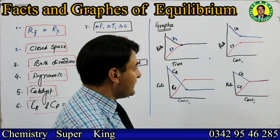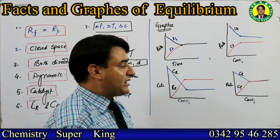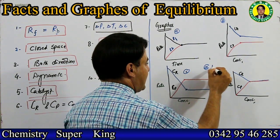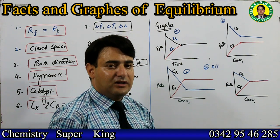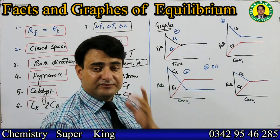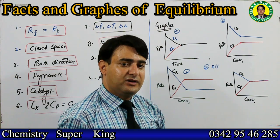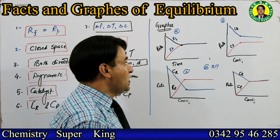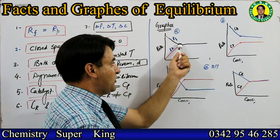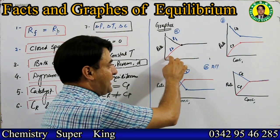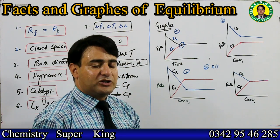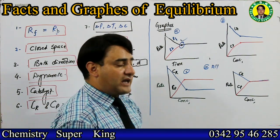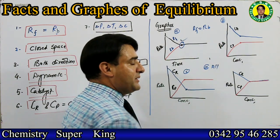Now let's look at the graphs of equilibrium. There are MCQs directly from this. There are two types of equilibrium graphs: a concentration-time graph and a rate-time graph. In the rate-time graph, at the start the forward reaction rate is high and decreases with time, while the backward reaction rate is low at first and increases with time. The point where both rates become equal is the chemical equilibrium point. At chemical equilibrium, rate of forward reaction equals rate of backward reaction.